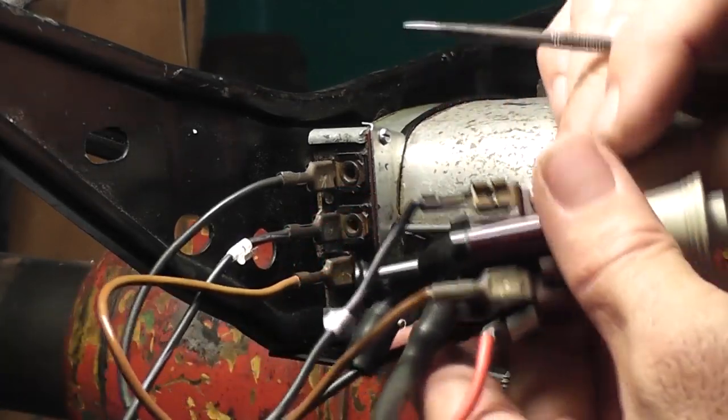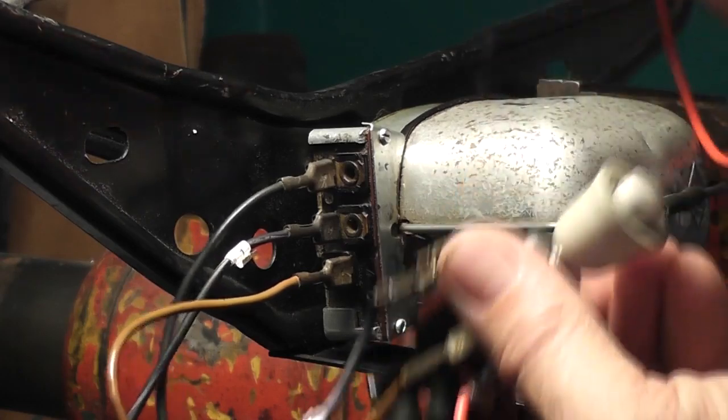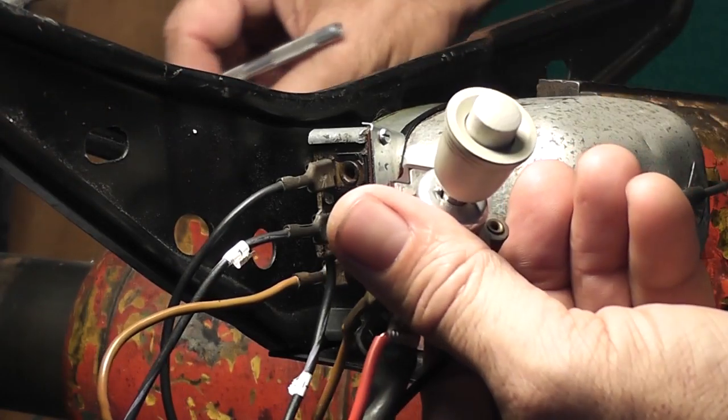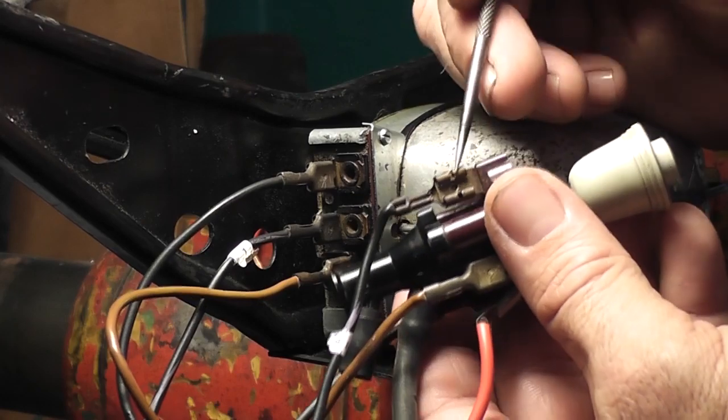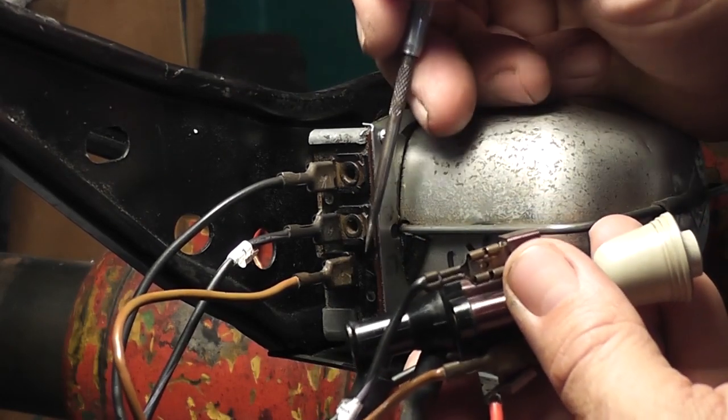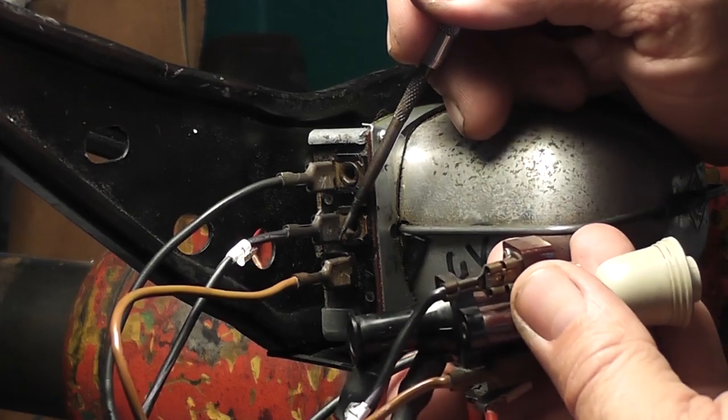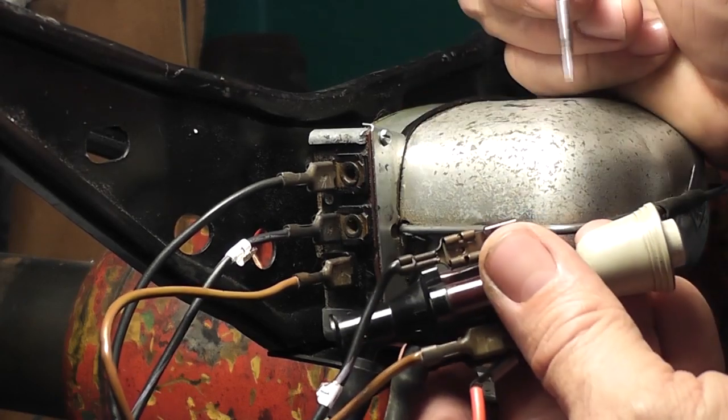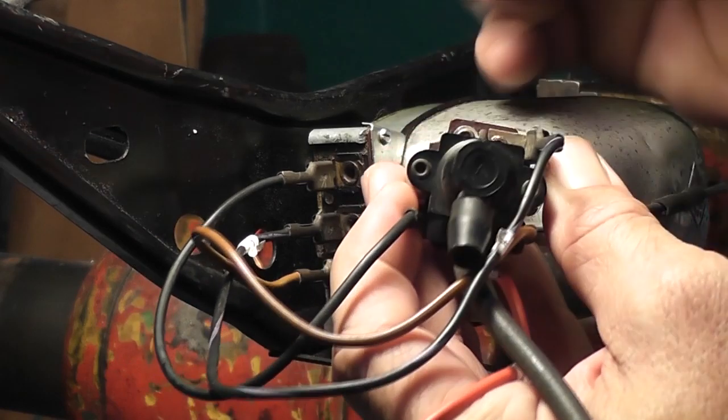This bottom one right here is 31b and that goes to 31b on the motor, which is the middle lug. Okay, middle lug.